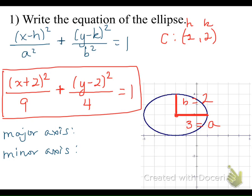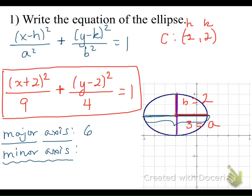Before moving on, let's review some vocabulary. The major axis is the longer diameter — from end point to end point. Since we have a radius of 3 units to the right and 3 units to the left, the length of the major axis is 6 units. The minor axis is the shorter diameter — 2 units up from the center and 2 units down — so the overall length of our minor axis is 4 units.